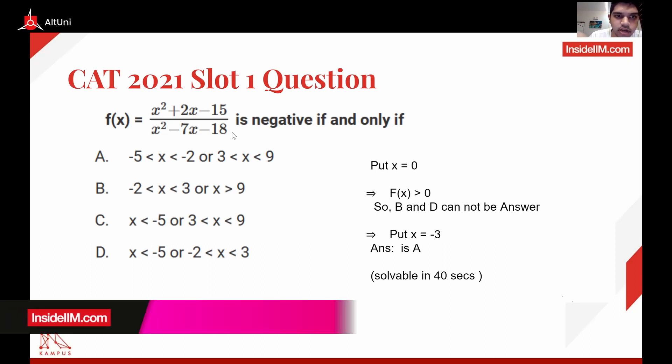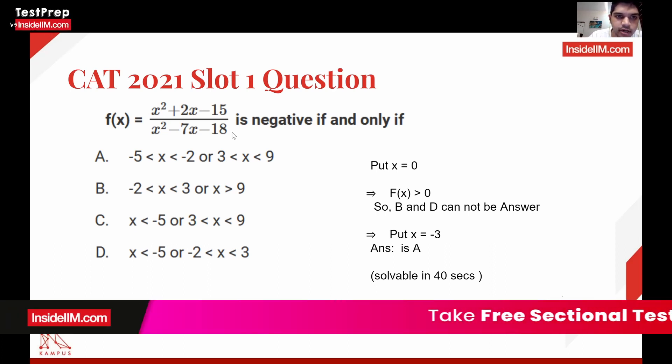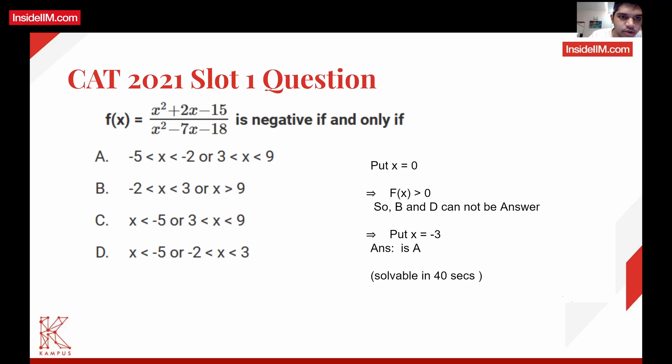Instead of that, the fastest value you can test is x equal to 0, because if you just substitute 0 it will become 15 by 18, which is positive, not negative. So all the options that cover x equal to 0 can be eliminated directly. B covers 0 and D also covers 0, so these two are immediately eliminated.